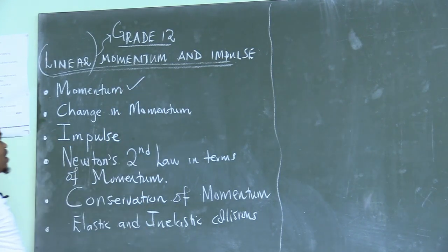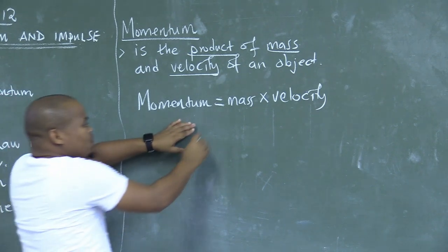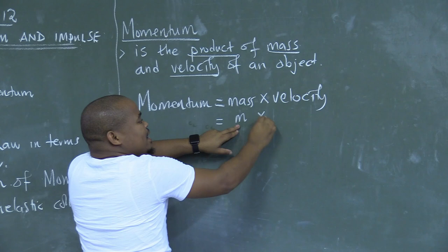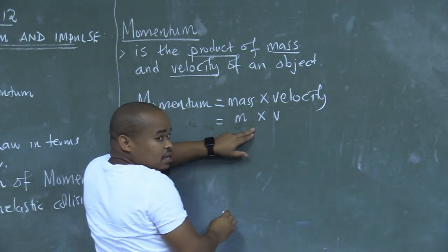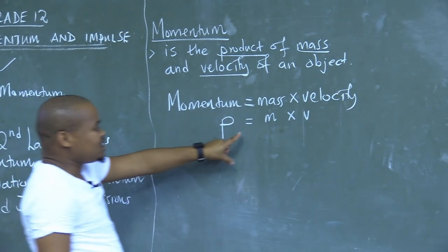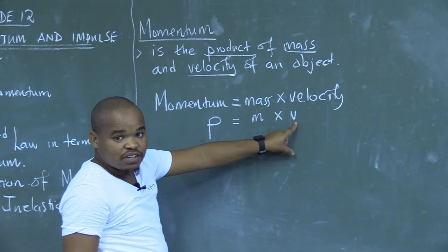Let us talk about momentum. We know that mass is given by symbol M and velocity is given by V. The small letter P is the symbol for momentum, equal to the product of the mass and velocity of an object.